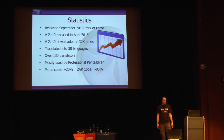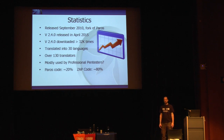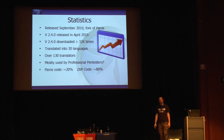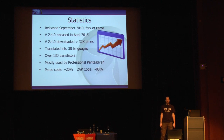I used to see comments saying ZAP is just a fork of Paros, but I did some quick calculations: the version we released — 2.4.0, not including the marketplace — only 20% is the original Paros code and 80% is new ZAP code.